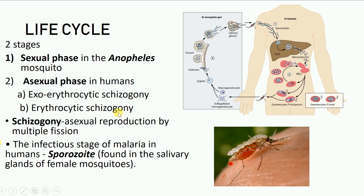Plasmodium reproduces asexually by multiple fission, and this process of asexual reproduction by multiple fission is known as schizogony. The exoerythrocytic phase means outside the erythrocytes or the red blood cells — that is, it is taking place in the liver cells. The erythrocytic schizogony takes place within the RBCs.